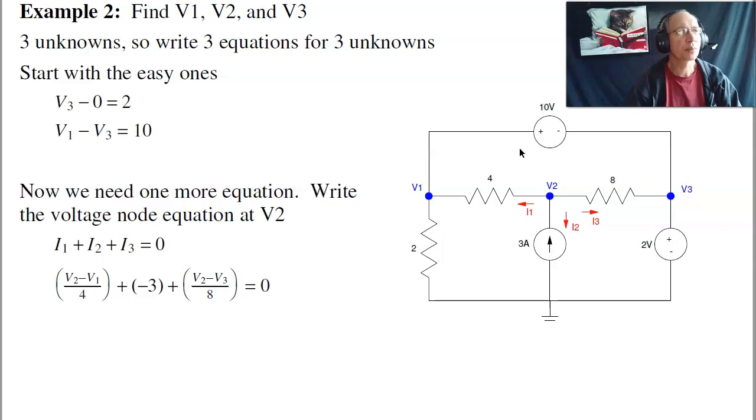At V1, I can't write the node equation because I don't know what the current up is. That's from this 10-volt source. At node 3, I can't write the equation because I don't know what this current is. At node 2, I know what all the currents are. I can write the node equation to V2. That's my third equation. That gives me V2 minus V1 over 4 minus 3 plus V2 minus V3 over 8 equals zero.